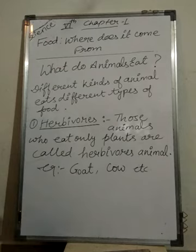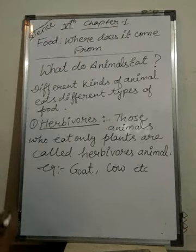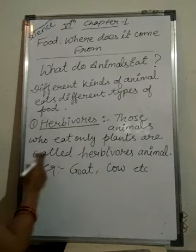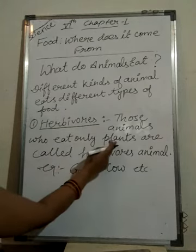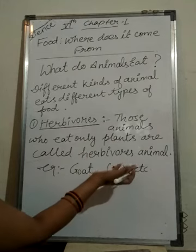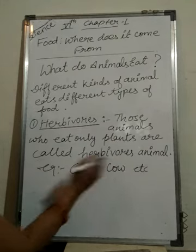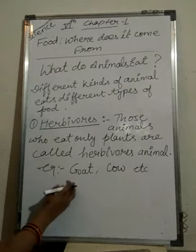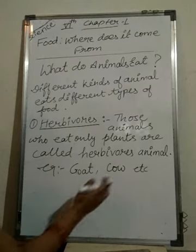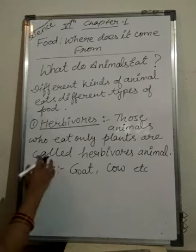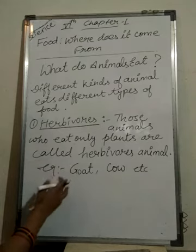The first one is herbivores. Which type of animals come in this category? Herbivore animals are those animals who eat only plants and plant products. For example, goat, cow, and many more examples of animals who eat only plants and plant products.